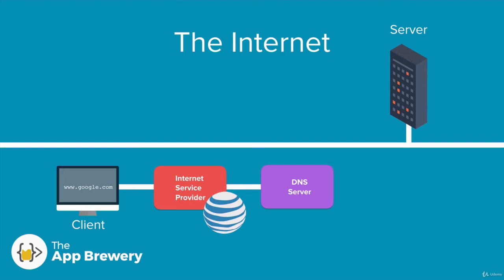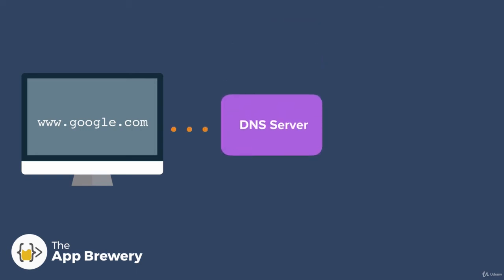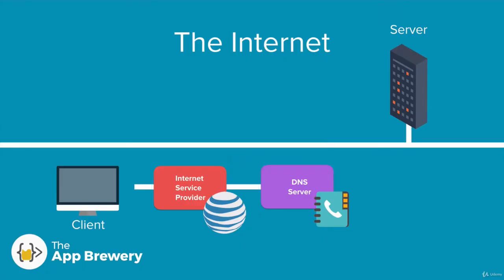A DNS server — a domain name system server — is essentially just a souped-up phone book. When you make that request through your browser, the DNS server looks up in its database the exact IP address of the website you're trying to access. Every single computer connected to the internet has an IP address. This is like a postal address for your computer, so that when people need to send and receive files on the internet, each computer can be located by its unique IP address. Once the DNS server finds the IP address, it sends that back to your browser, and now you know the exact address where you can find the Google homepage.